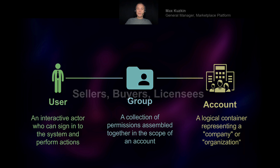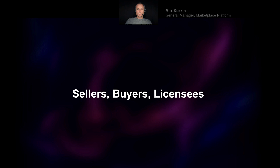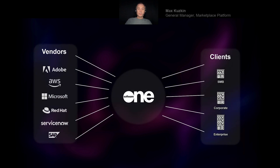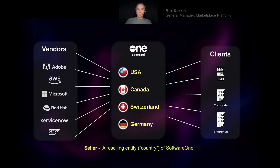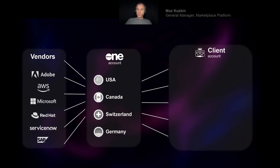This brings us to a few additional objects needed to perform actions in the platform: sellers, buyers, and licensees. SoftwareOne operates as a network based on actual country-level legal entities. A seller is the object in our platform that represents one of those legal entities — we have close to hundreds of them across the globe. Examples of a seller would be SoftwareOne United States, Canada, or Germany. Clients work with us through one of those entities, or multiple entities in more complex cases.